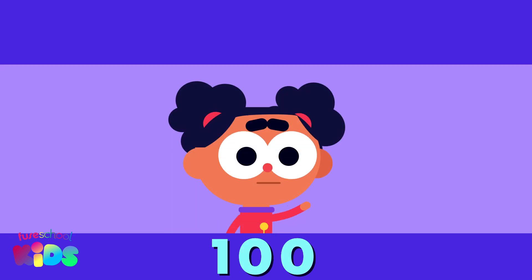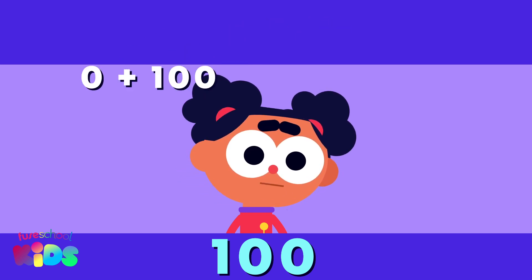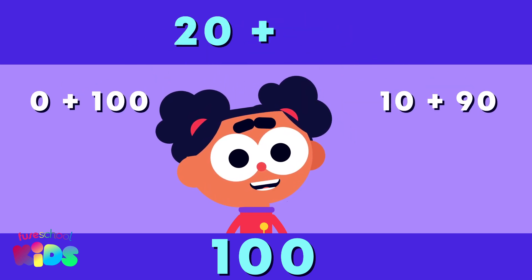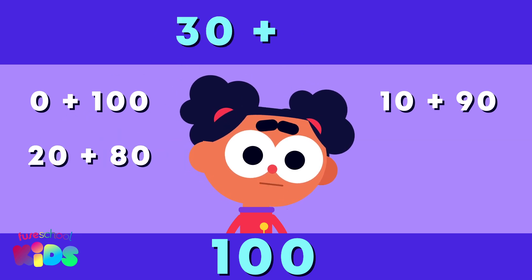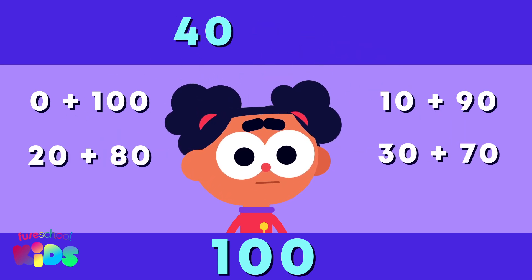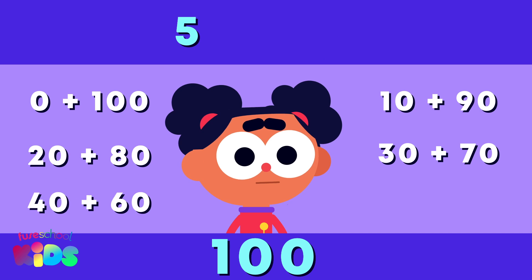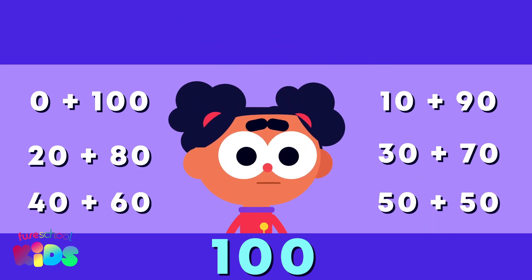Here is a rhyme to help you remember the pairs to one hundred: zero and a hundred, ten and ninety, twenty and eighty, thirty and seventy, forty and sixty, fifty and fifty — make one hundred!